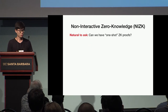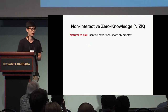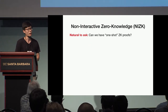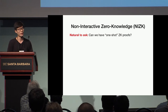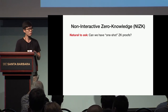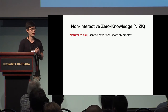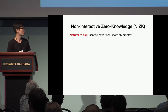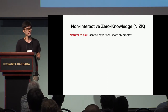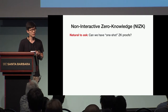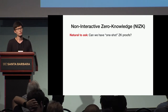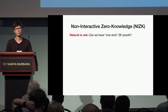Zero-knowledge proof systems are very well studied objects in cryptography. By now, we have many constructions from a variety of different assumptions. However, a natural question we can ask is: what is the minimum number of rounds required for a zero-knowledge proof system? In particular, can we have a single-round or one-shot zero-knowledge proof system?